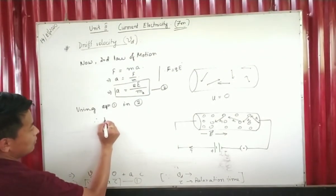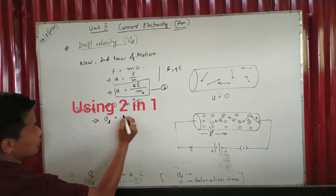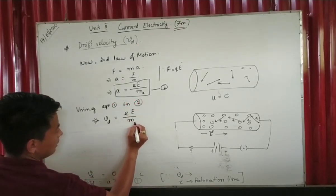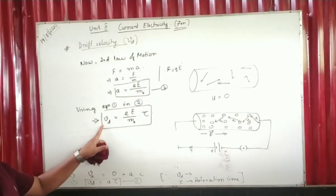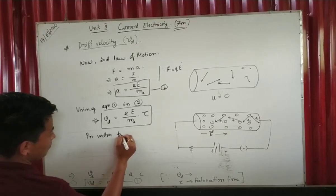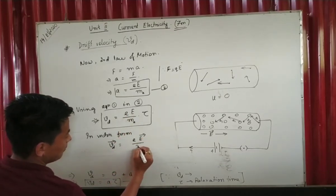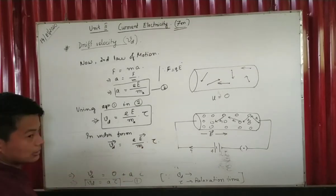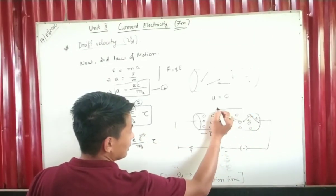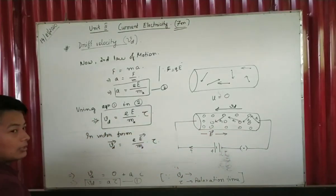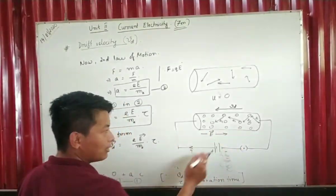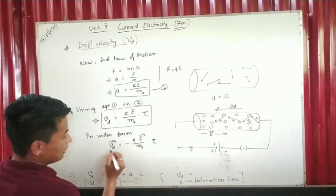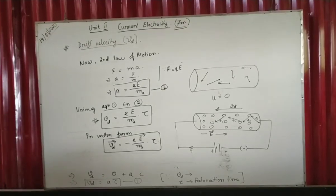Therefore, vd equals eE/m times tau — this is the required relation for drift velocity. In vector form, the drift velocity vector equals eE vector divided by mass of electron, multiplied by relaxation time tau. This is the equation for drift velocity in vector form; only the magnitude is taken.